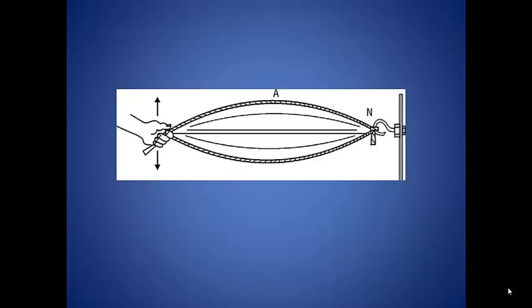If you continue to move your hand, waves will keep moving towards the wall and keep reflecting back to you. Usually there will be quite a mess of waves until you find just the right frequency. When you find this frequency, the two waves will interfere in such a way that the interference pattern forms a larger amplitude standing wave.